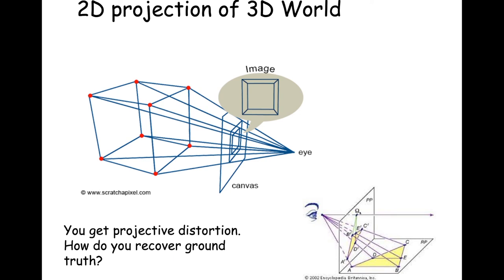One important question is how you recover ground truth about an object in the 3D world, given projective distortion through a 2D snapshot. For example, a right triangle viewed at an angle — based on the relative orientation between the object and the imaging plane — that right angle is no longer a right angle in the projection.